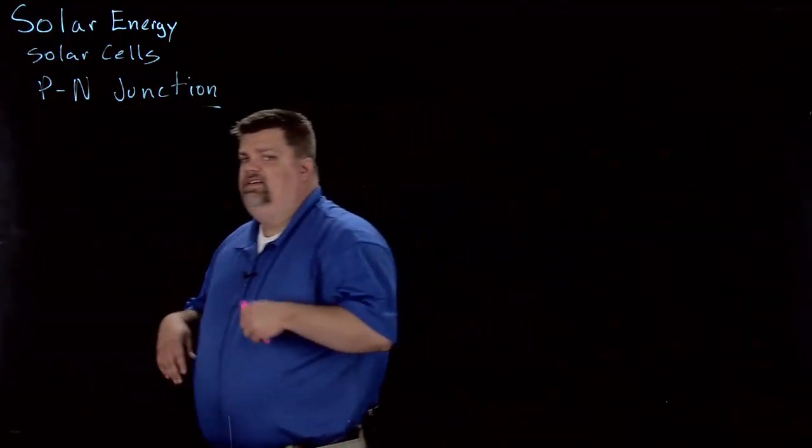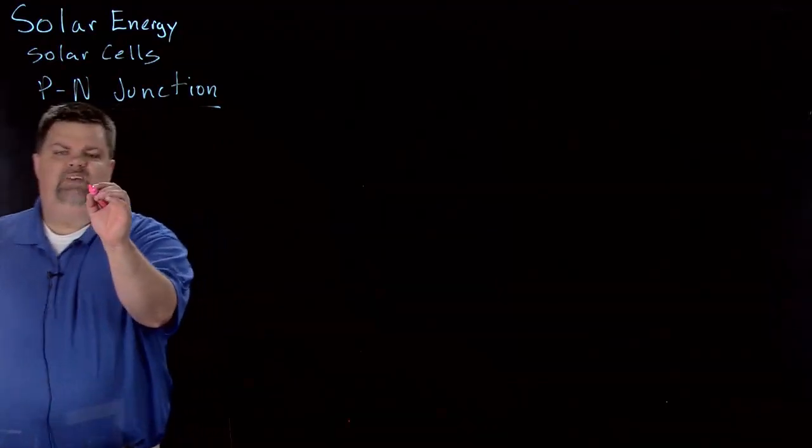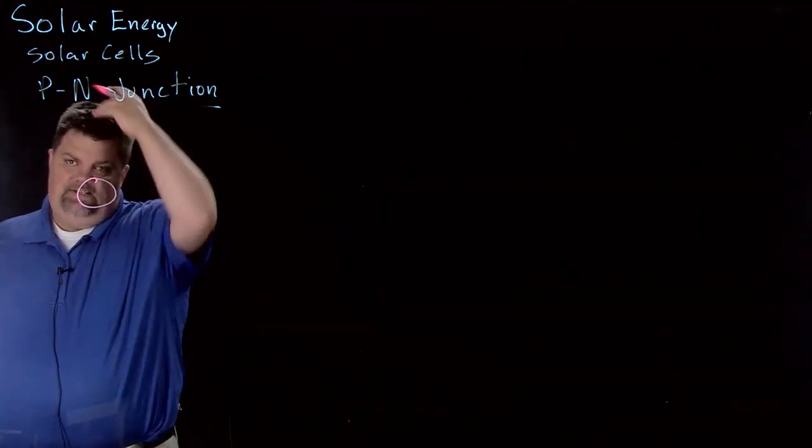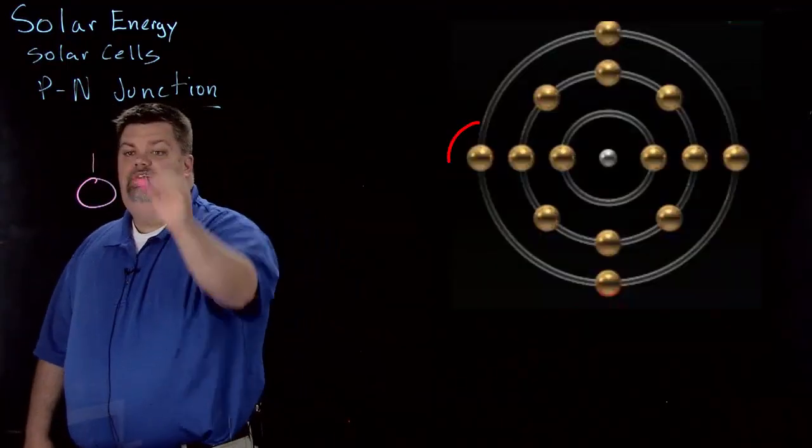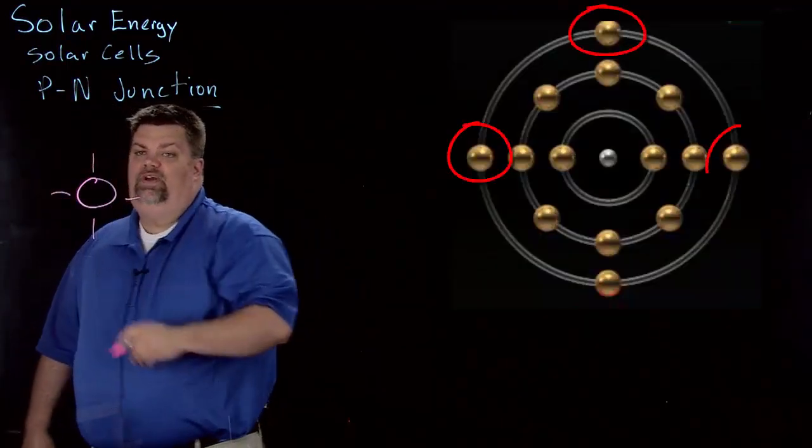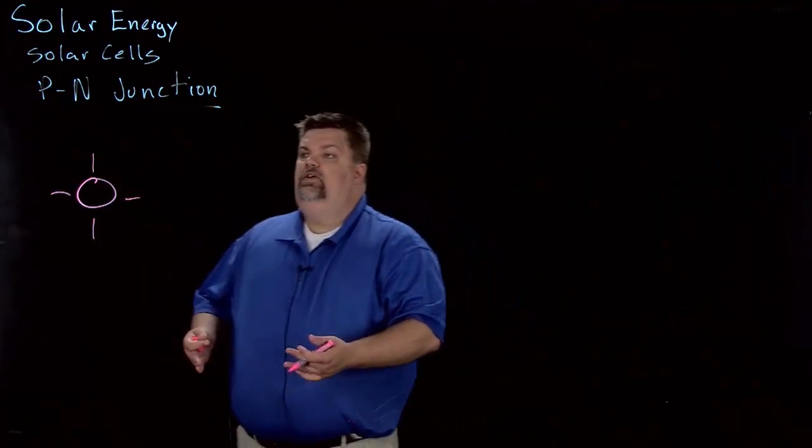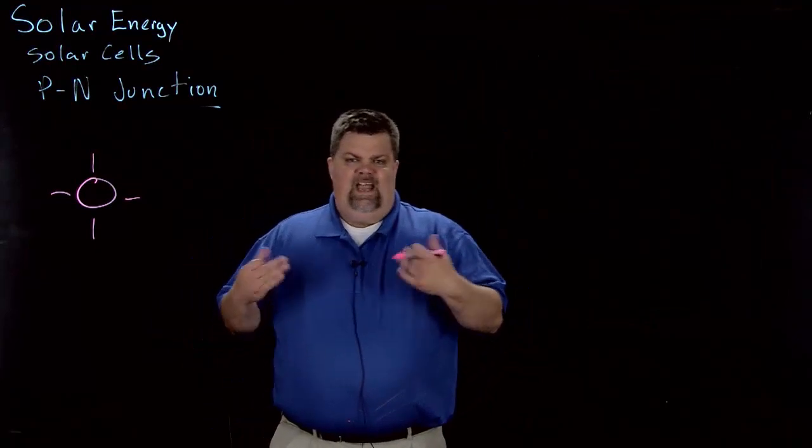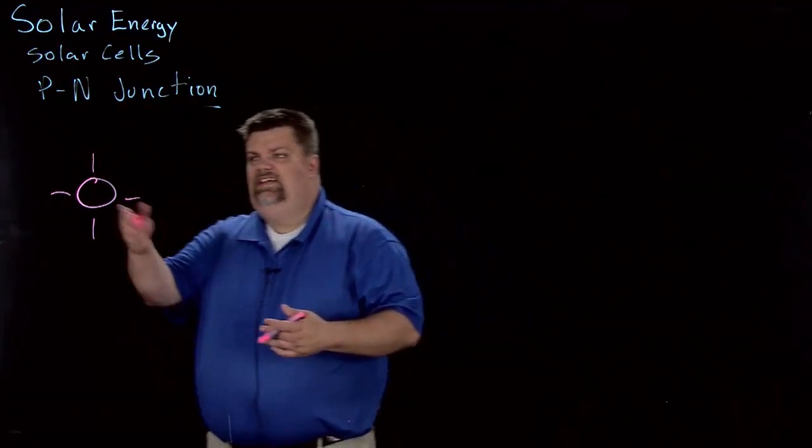If we take something like a semiconductor like silicon, silicon has what we call four valence electrons. That means in its outer ring or the highest energy state it has four electrons. We all know that in that highest energy state atoms feel secure if they have eight electrons, so it's seeking pairs.